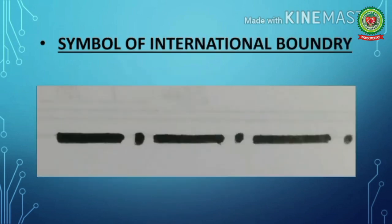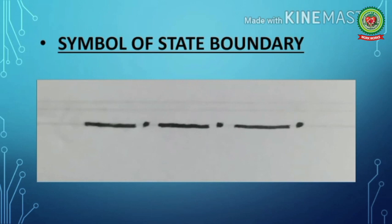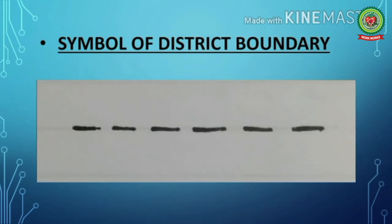Next is international boundary — the boundary between countries — depicted with bold dash and dot in black color. Next is state boundary — the boundary between states — demarcated by a single dash and dot line in black color. District boundary — the boundary between districts — is depicted with a broken line in black color.